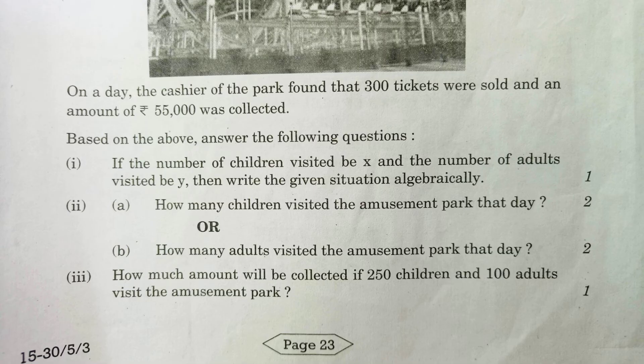Based on the above, answer the following question. The first question is: if the number of children visited be X and the number of adults visited be Y, then write the given situation algebraically. It is worth 1 mark.